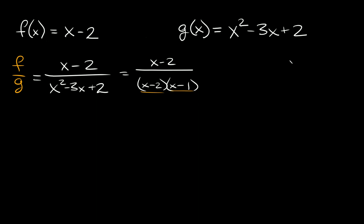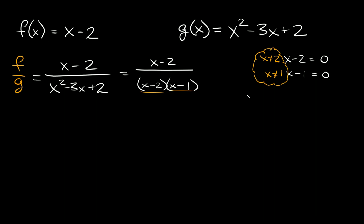Remember that in any fraction, the denominator can never be equal to zero. So what x values would make our denominator zero? Setting each factor equal to zero: x minus 2 equals zero gives x equals 2, and x minus 1 equals zero gives x equals 1. So for our domain, x cannot be equal to 2 and x cannot be equal to 1, because those values make the denominator zero.